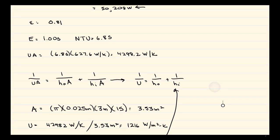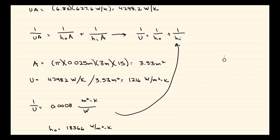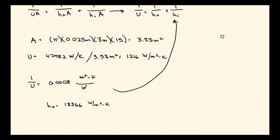Now we're going to calculate that area using the 0.025 meter diameter, and we come up with a total area of 3.53 meters squared. So from that, we can get our U, which is equal to the 4298.2 watts per K, divided by 3.53 meters squared, and our overall heat transfer coefficient is 1216 watts per meter squared K. So our 1 over U is equal to 0.008 meters squared Kelvin per watts, which leaves us with an outside heat transfer coefficient of 1836.6 watts per meter squared K.